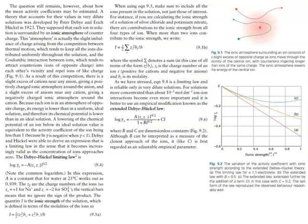Debye and Hückel derived a limiting law — valid as ion concentration approaches zero — given as relationship 9.4. Note that the common logarithm is used here, not the natural log. The constant A for water at 25°C is 0.509. z_j are the charge numbers of the ions; for example, z+ = +1 for sodium and z− = −2 for sulfate. The vertical bars indicate we ignore the sign. The quantity I is the ionic strength, defined in terms of ion molalities as in relationship 9.5a, summing contributions from all ions present in solution.